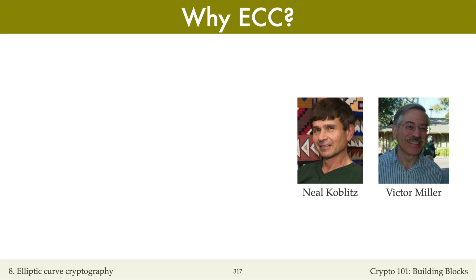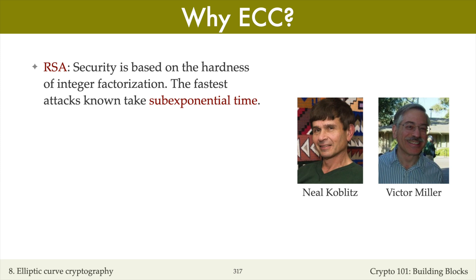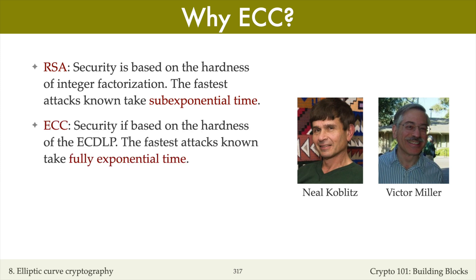RSA is a perfectly good public encryption scheme and signature scheme, so one can ask: why elliptic curve cryptography? RSA is based on the intractability of the integer factorization problem. The fastest known attack on this problem is the number field sieve, which takes sub-exponential time. On the other hand, the security of all elliptic curve cryptosystems is based on the intractability of the elliptic curve discrete logarithm problem. The fastest known attack on this problem is Pollard's algorithm, which takes fully exponential time.